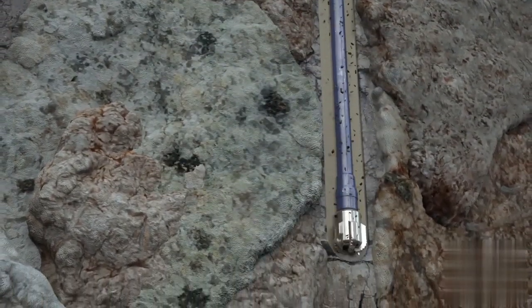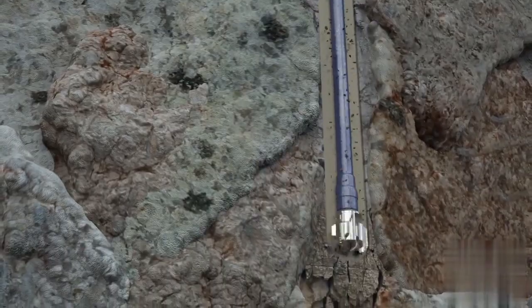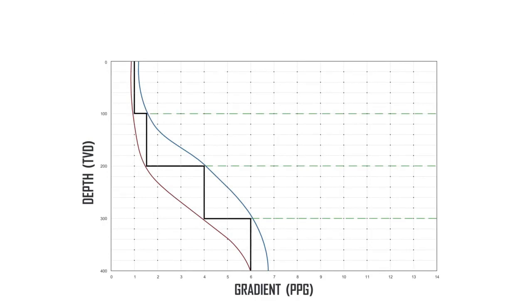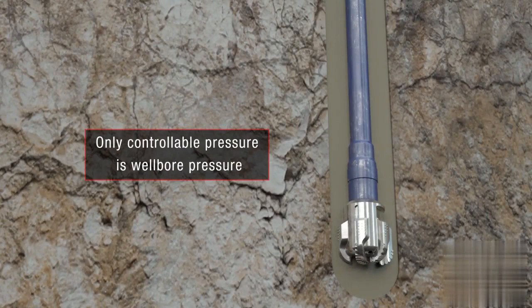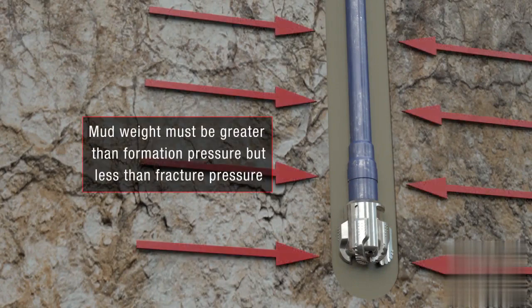Each formation has a drilling window that drillers must be aware of as they drill deeper. A drilling window is the space between formation pressure and fracture pressure. It is most important to understand that formation and fracture pressures are beyond your control. What is in your control is hydrostatic and bottom hole pressure. Drilling fluid must be heavy enough to hold back formation pressure, but not so heavy that it causes the formation to fracture.